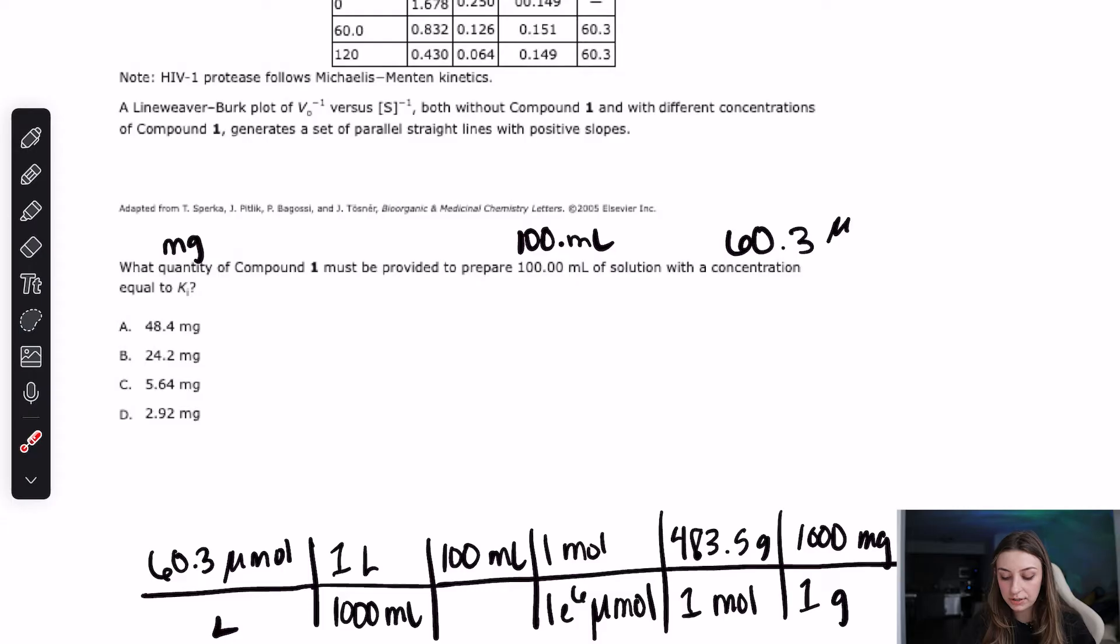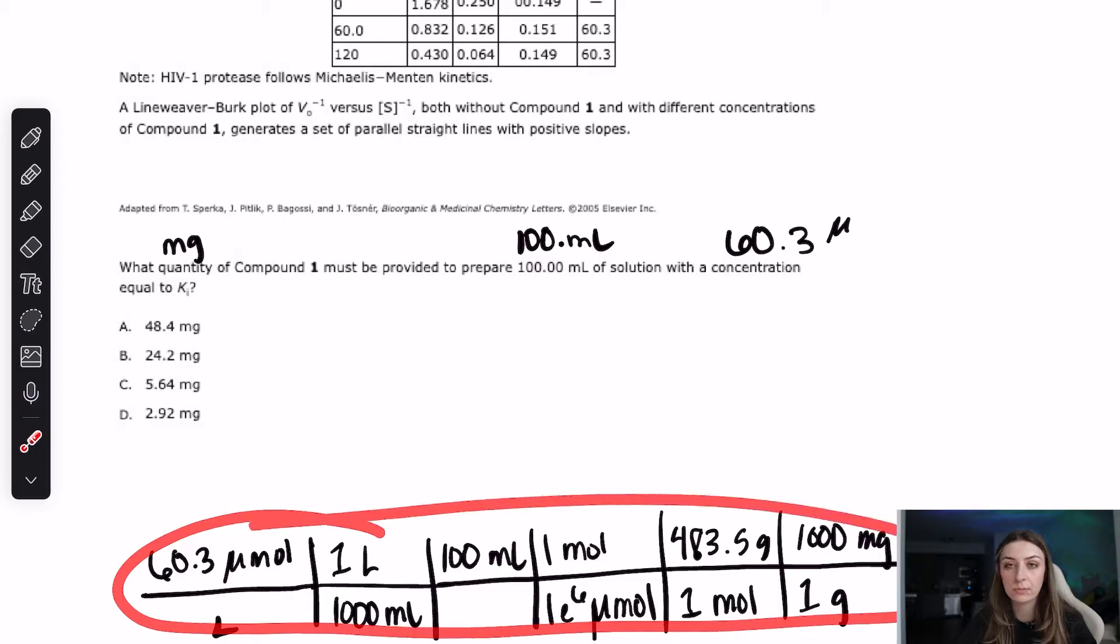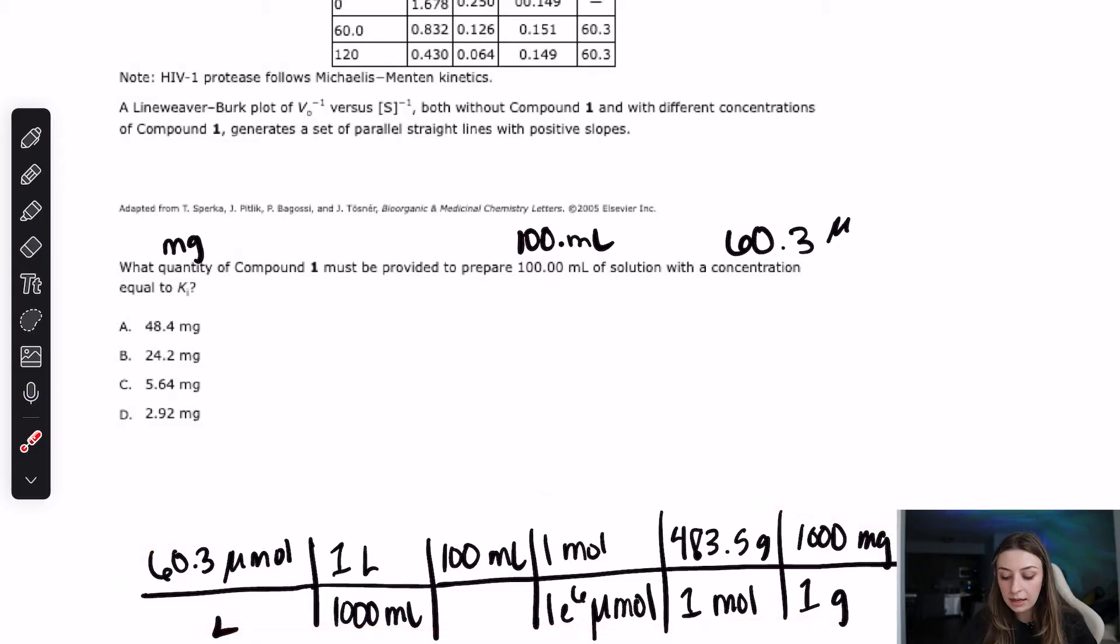So that's how you would simplify the question stem. And if you weren't able to get to the fact that this was a math question, and you just had to basically use units and use dimensional analysis, and get it down to saying you have to have 2.92 milligrams worth of compound one to get 60.3 micromolar if you have 100 milliliters of solution, then you probably had a problem with simplifying the question stem.